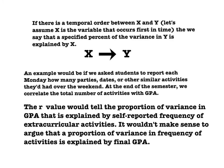But suppose there is a temporal order between X and Y. For the sake of convenience, we'll assume that X occurs first in time. Then we say that a specified percent of the variance in Y is explained by X. Here's an example: what if we ask students to report each Monday how many parties, dates, or other similar extracurricular activities they had over the weekend? At the end of the semester, we correlate the total number of activities with grade point average.